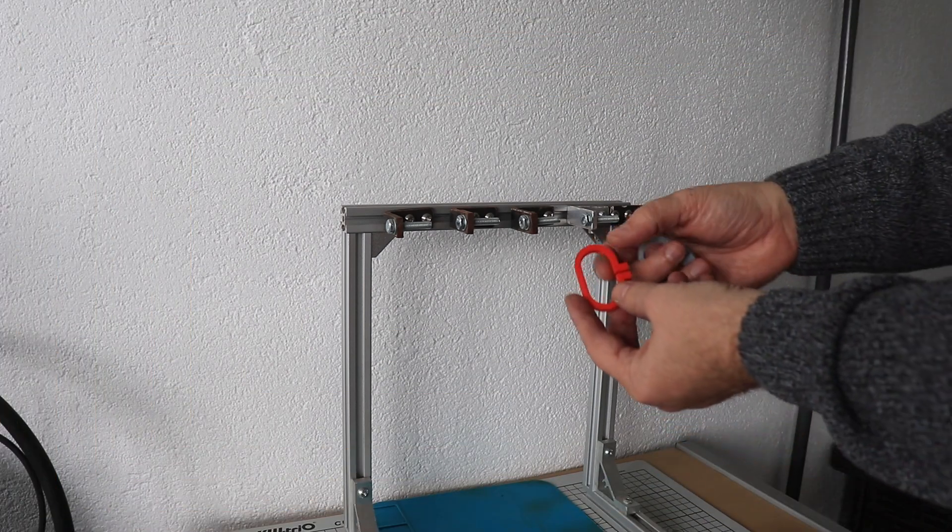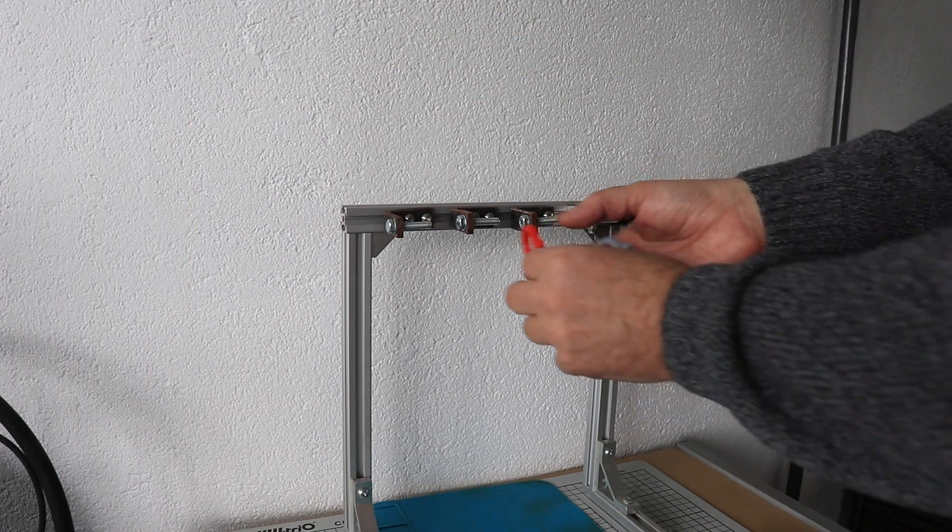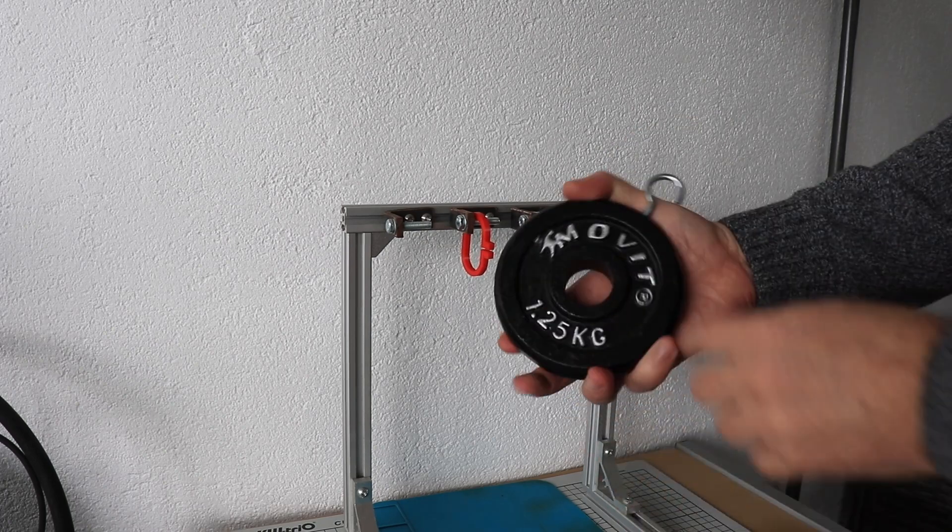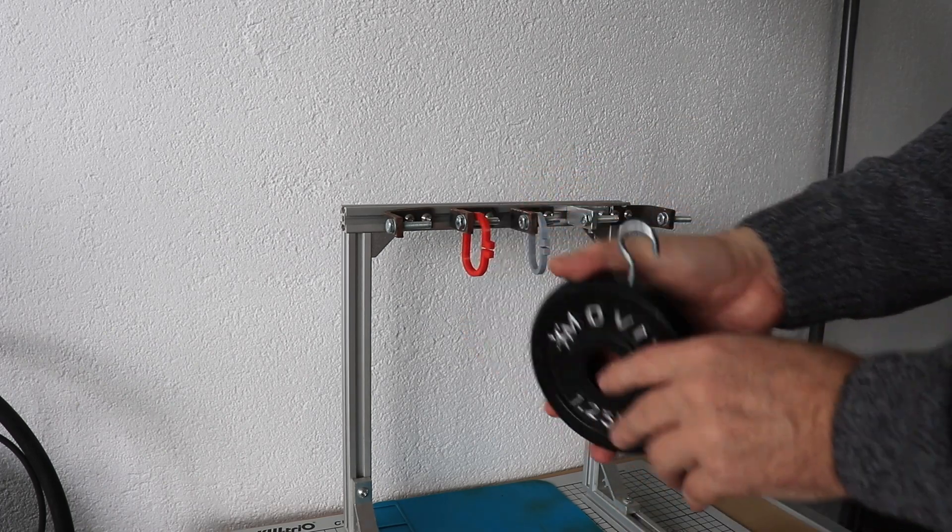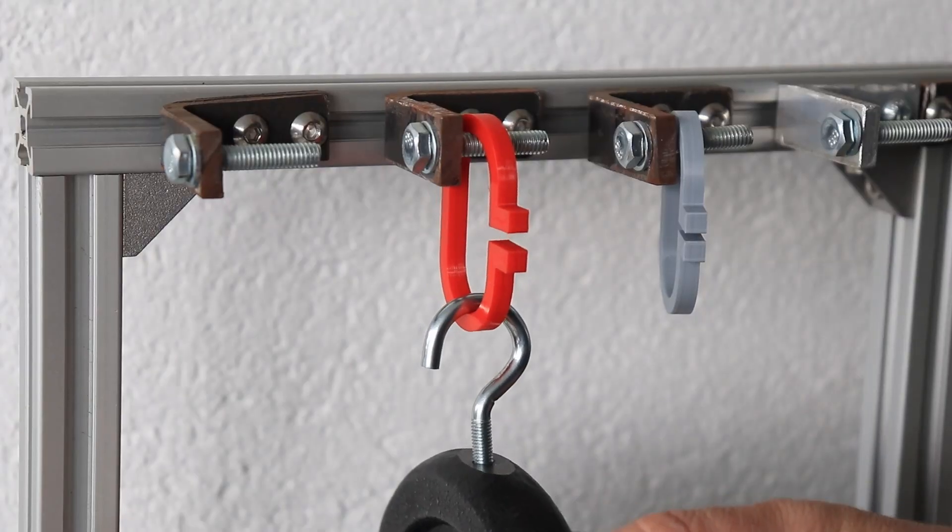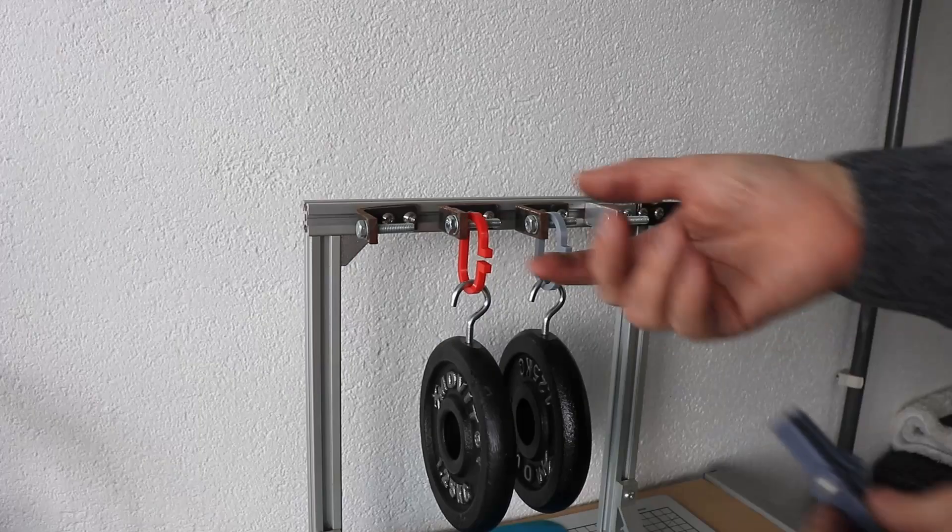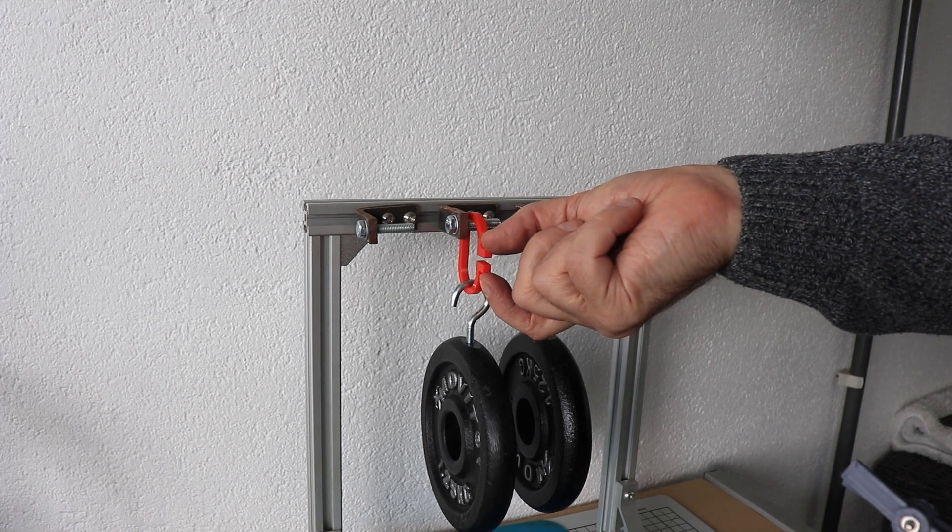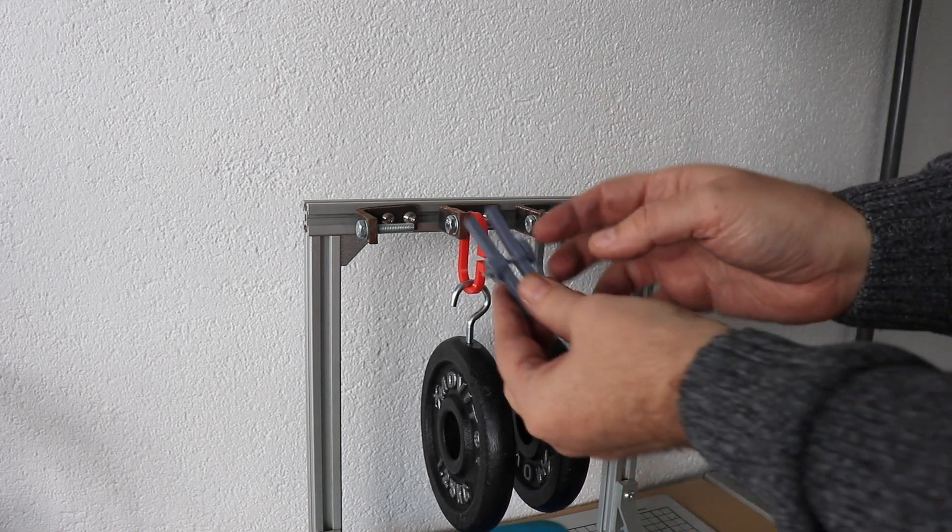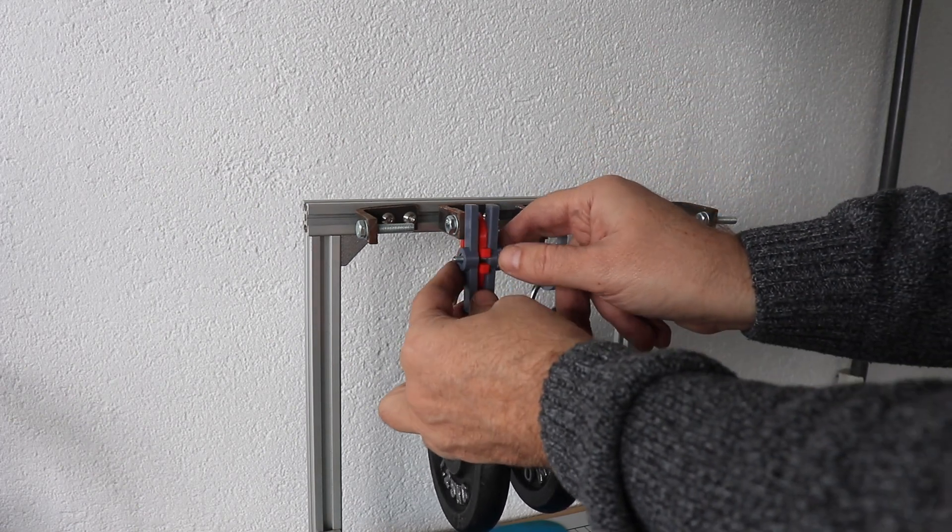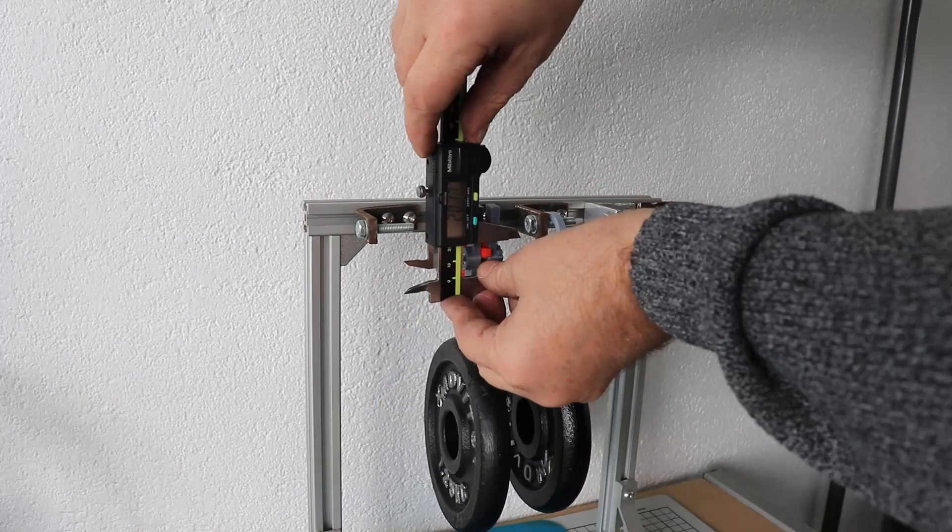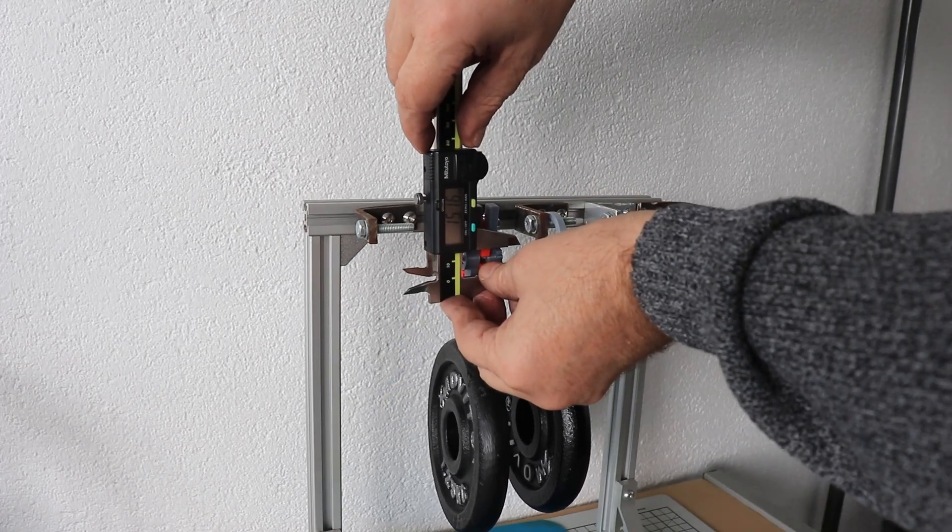Now my regular creep test to see the deformation under constant load. I will place this 1.25 kg load on these test objects. Now I will measure the distance between these two reference surfaces. For more accurate measuring I am locking their position.